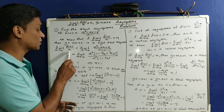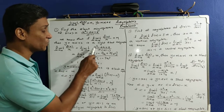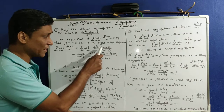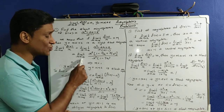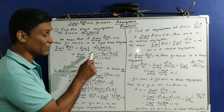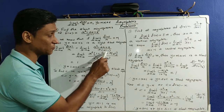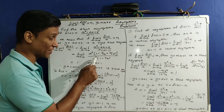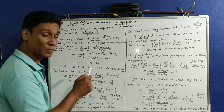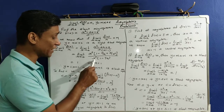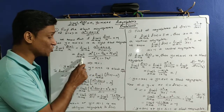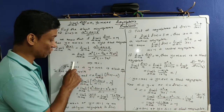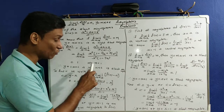We compute: limit as x tends to infinity of f(x)/x = limit of (x² − 2x + 2) / (x · (x − 1)). Taking x² outside: limit of x² · (1 − 2/x + 2/x²) divided by x² · (1 − 1/x). The x² terms cancel, and the limit equals 1, so m = 1.